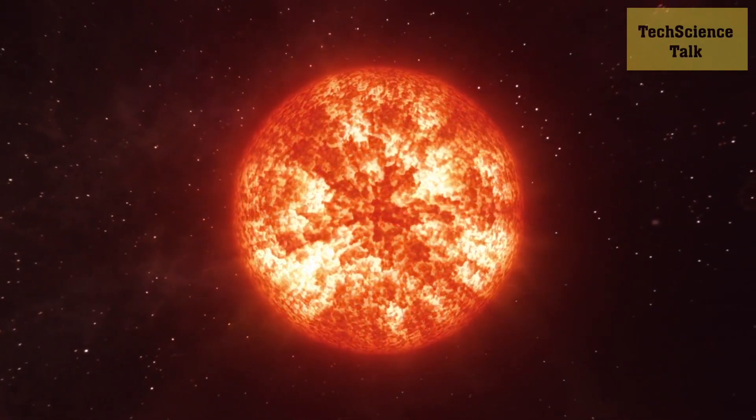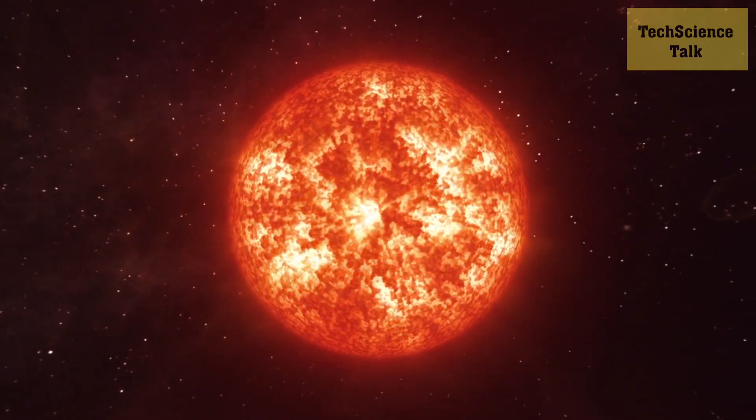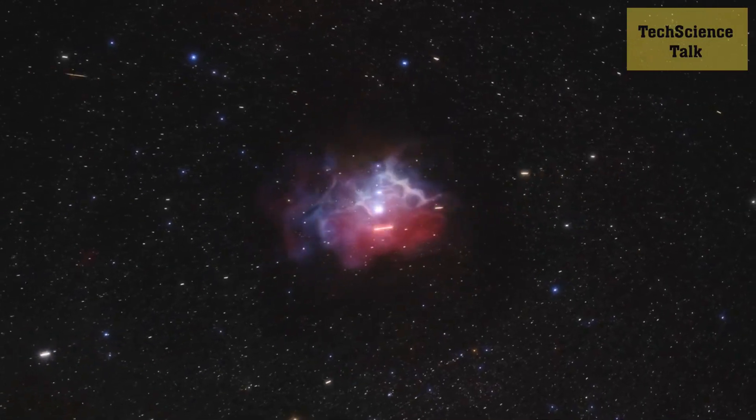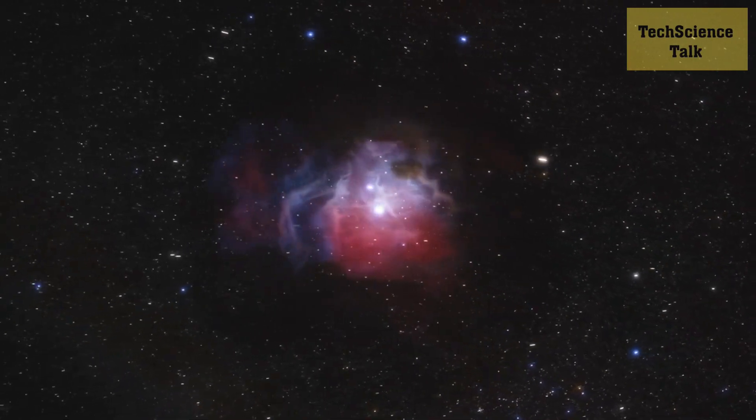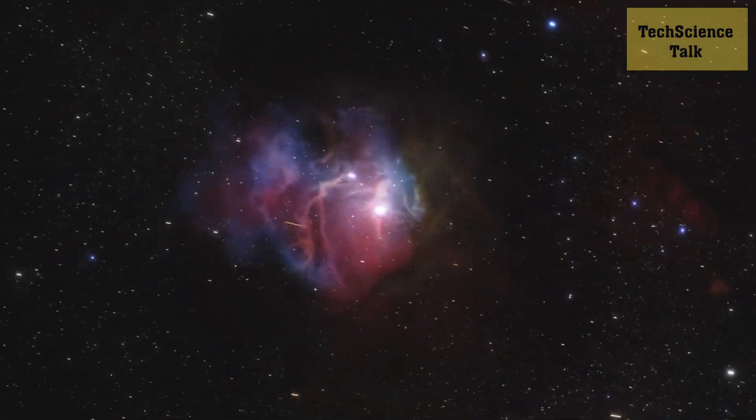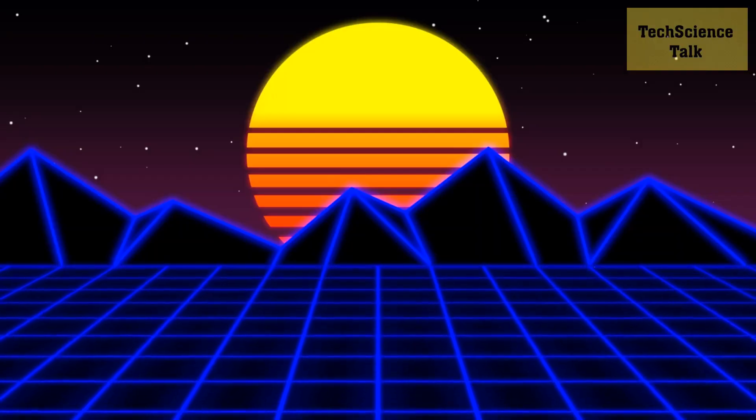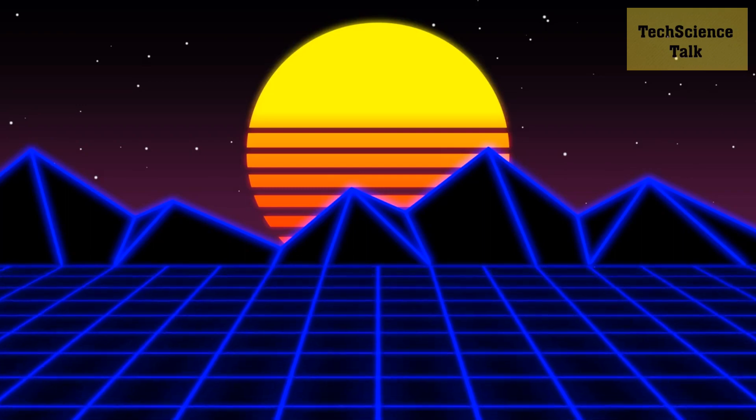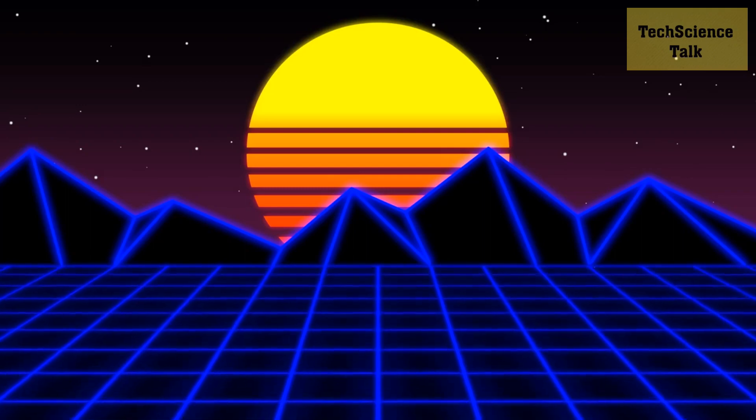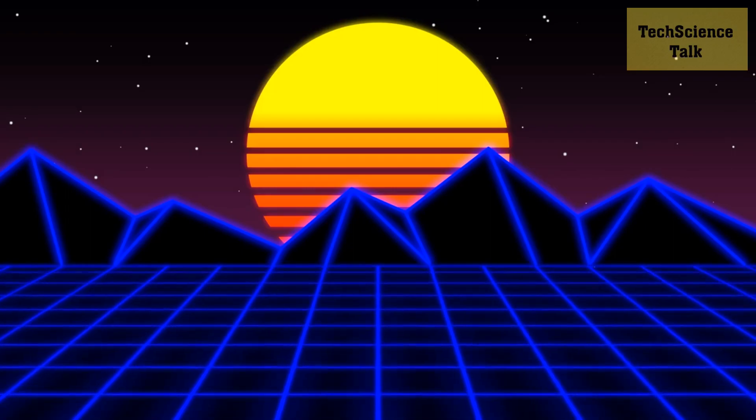Supergiants are a type of star that are significantly larger and more luminous than average stars like our sun. They can be found in different regions of space, including nebulae and star clusters. These behemoths can range in size from ten to one thousand seven hundred times the radius of the sun, and their luminosity can be millions of times brighter than our own star. Their extreme conditions make them a fascinating subject for study and exploration.